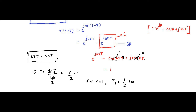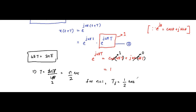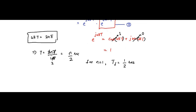This is the general expression of the period, and this is the fundamental period. So yes, the above exponential signal e^(j4πt) is periodic with a general period of n/2 seconds and a fundamental period equal to 1/2 second.